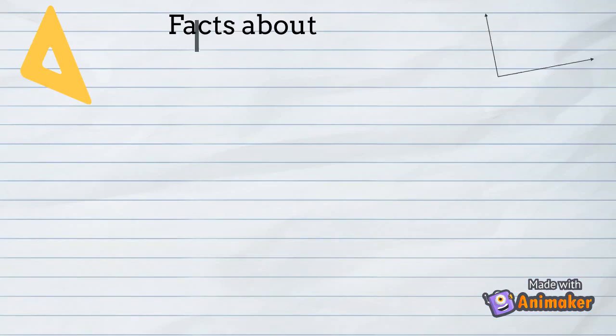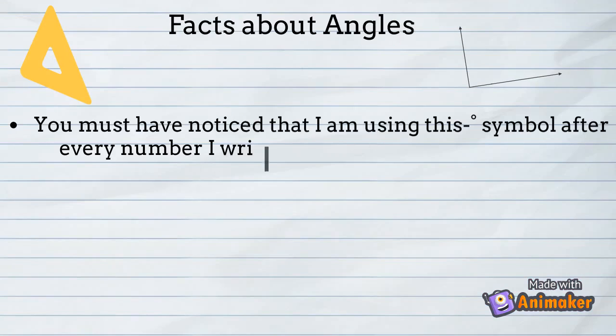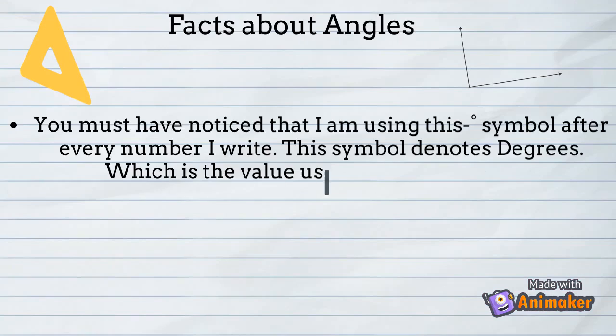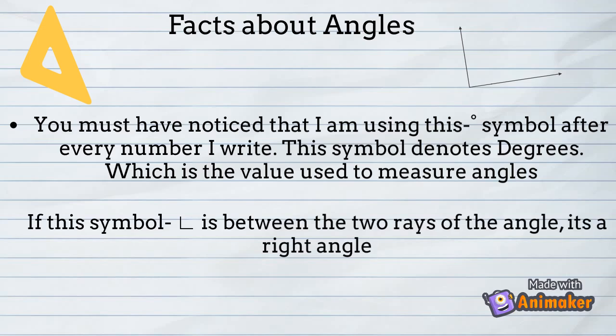Facts about angles. You must have noticed that I am using this symbol after every number I write. This symbol denotes degrees, which is the value used to measure angles. If this symbol is between the two rays of the angle, it's a right angle.